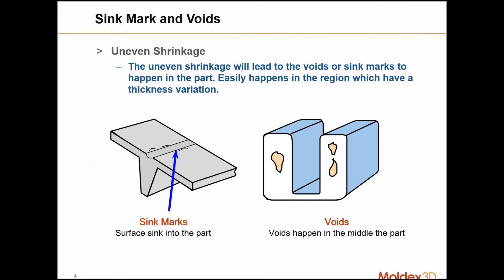So just some basics — what is a sink mark? Sink marks are a defect that appear as depressions on the surface of a molded part. Typically you're going to see it at a thicker cross section of a part, maybe opposite areas with molded-in features such as ribs or bosses. A similar defect, which happens on the inside of the part, is a void — pockets of trapped air in the cross section of a part, usually in a thick wall section.